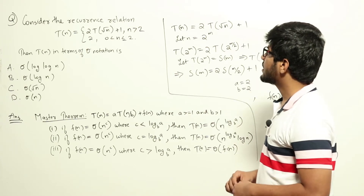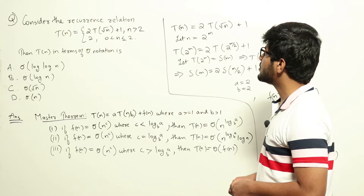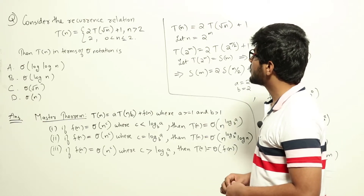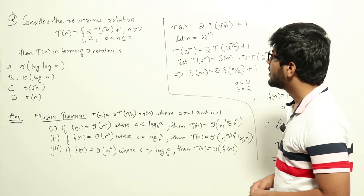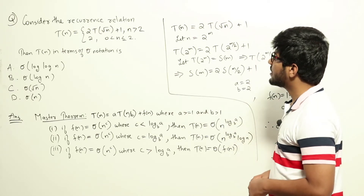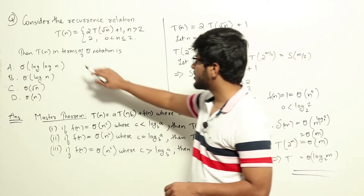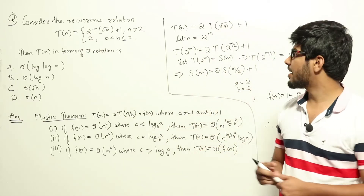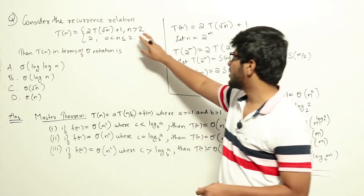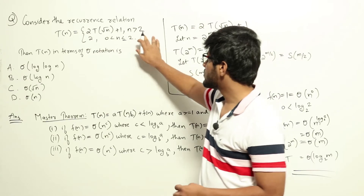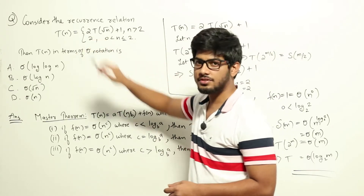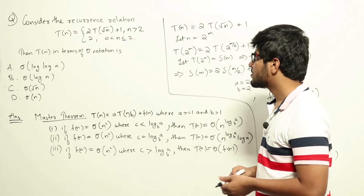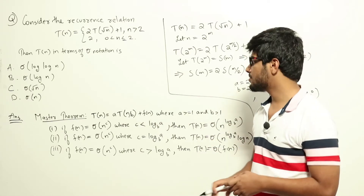Consider the recurrence relation T(n) = 2·T(√n) + 1 for n > 2, and T(n) = 2 if 0 < n ≤ 2. We need to find T(n) in terms of theta notation. We have been given four options. This is a question on solving recurrence relations — we need to solve it and find the time complexity of T(n) from these four options.